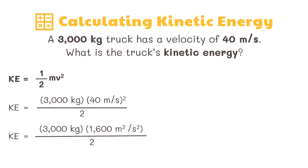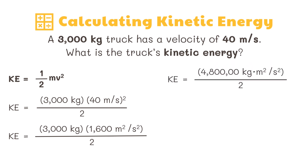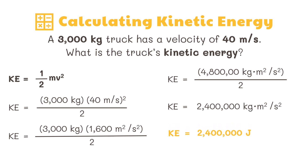Next, multiply the given mass of 3,000 kilograms by 1,600 meters squared per second squared, resulting in 4,800,000 kilograms times meters squared per second squared. Lastly, we divide this by 2, which equals 2,400,000 kilograms meters squared per second squared, or 2,400,000 joules.